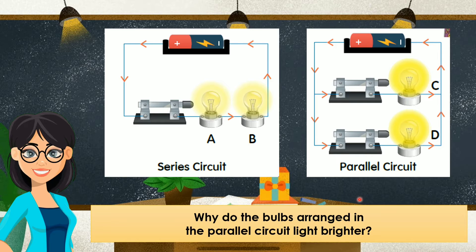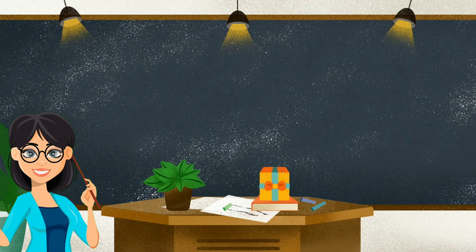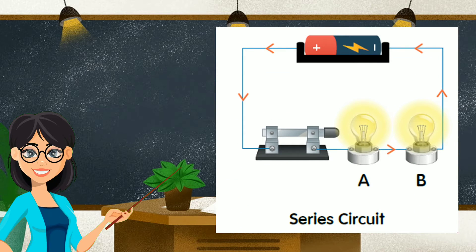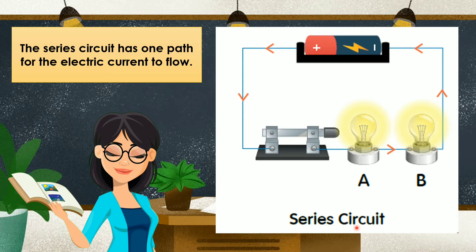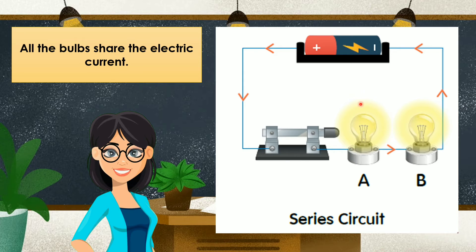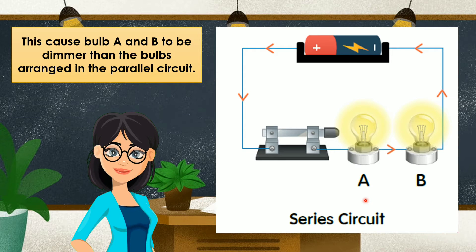The question is: why do the bulbs in the parallel circuit light brighter? Let us see the brightness of the bulb in the series circuit. The series circuit has one path for the electric current to flow. All the bulbs share the electric current. This causes bulb A and B to be dimmer than the bulbs in the parallel circuit.